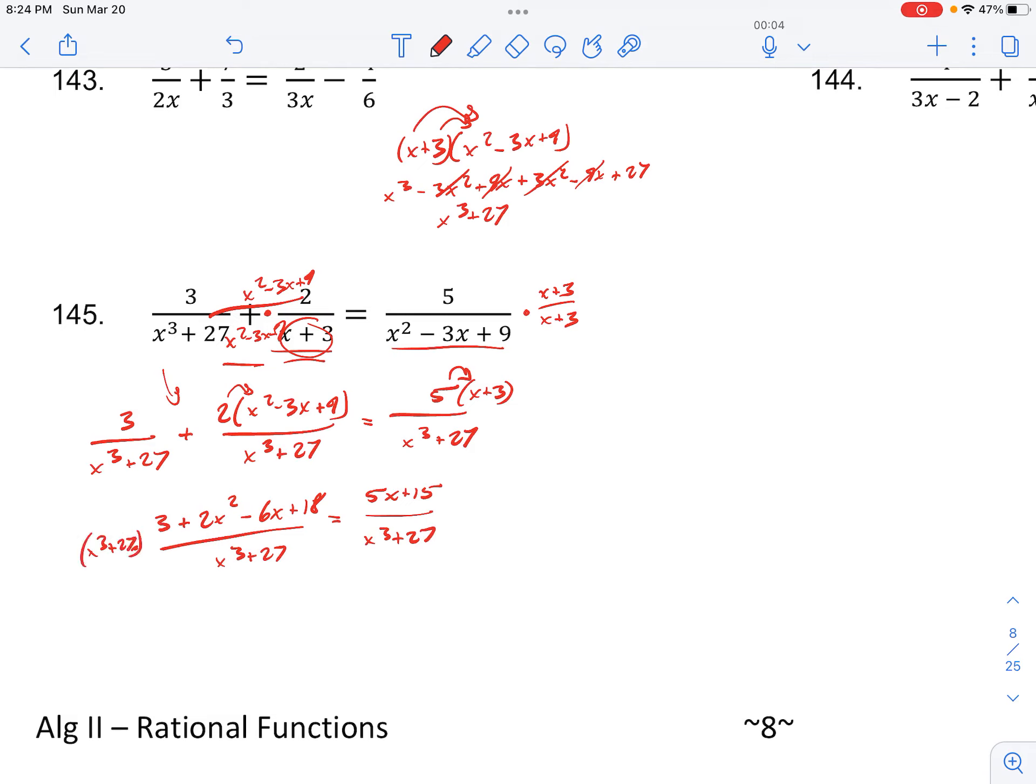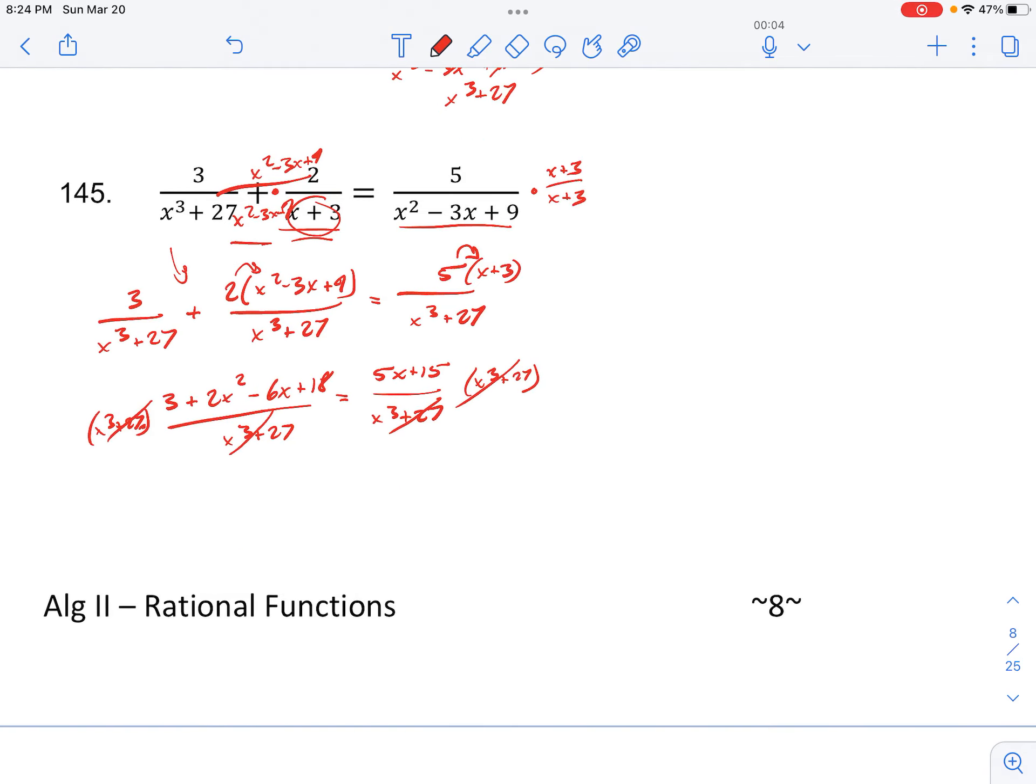Now if we multiply by x cubed plus 27 on both sides, we'll cancel the denominators, so we're left with just the numerators. So we have 3 plus 2x squared, or let me combine the constant terms, so we have 2x squared minus 6x, and then 3 plus 18 is 21, equals 5x plus 15.